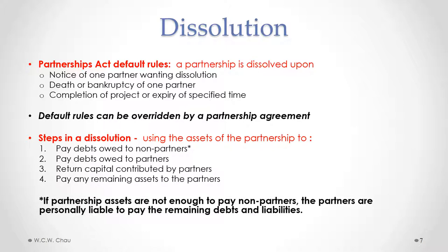If the partnership assets are not enough to pay the debts owed to non-partners, the partners are personally liable to pay the remaining debts and liabilities. This follows from the basic concept that the owners and the business are one and the same — if partnership assets are insufficient, the partners themselves are personally liable for whatever debts and liabilities remain.